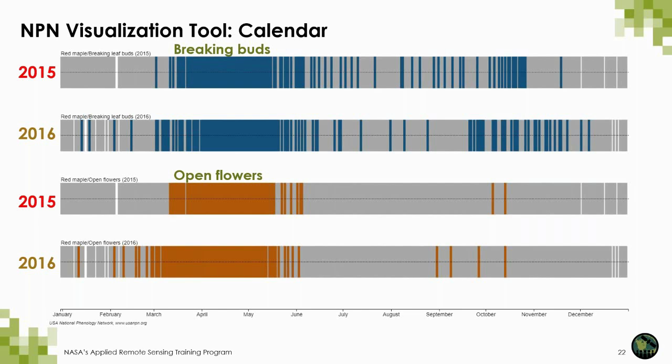You can also view a calendar that identifies the time period of events for a particular species, family, or class. In this example we have chosen red maple, with the top two panels in blue indicating the time period of breaking buds from 2015 along the top and 2016 in the second panel. In the bottom two panels you can see the differences in open flowers from 2015 and 2016. For example, you can see that flowers appeared earlier for the red maple in 2016 compared to 2015, and you can go back all the way to 1900 if there are data for that particular species.